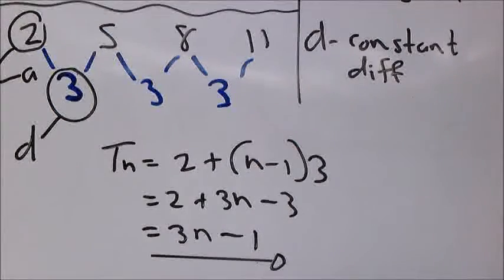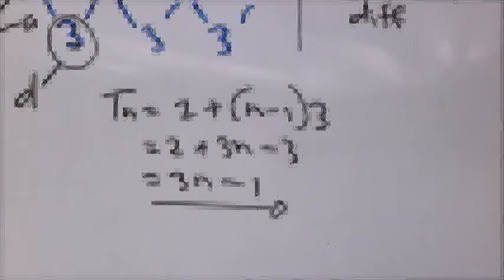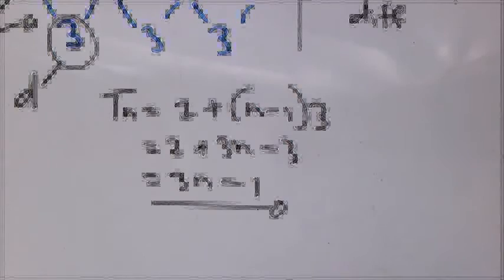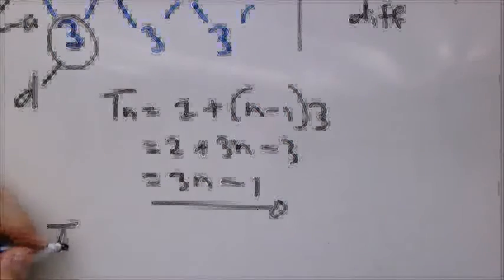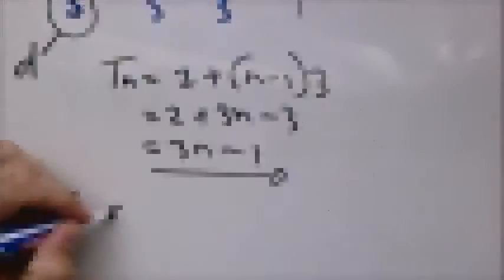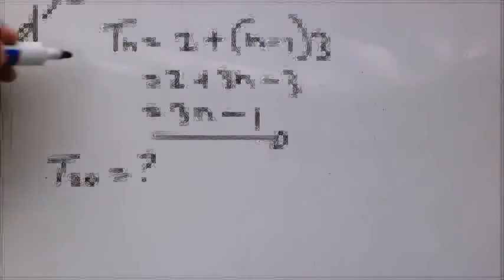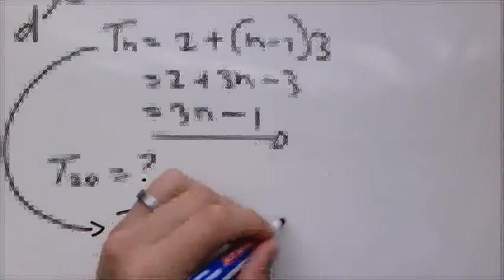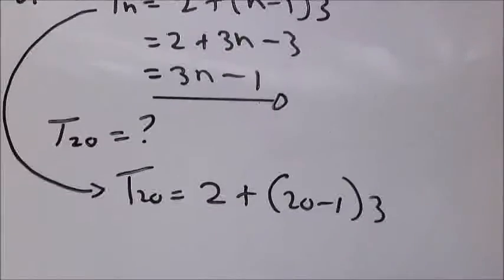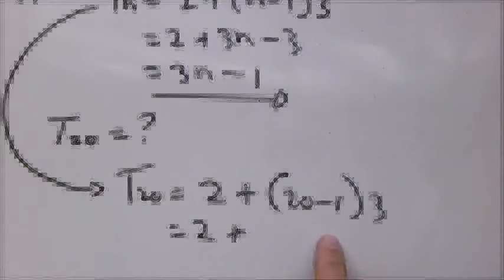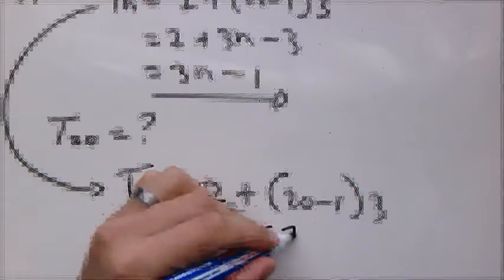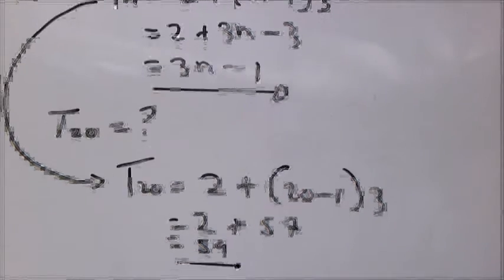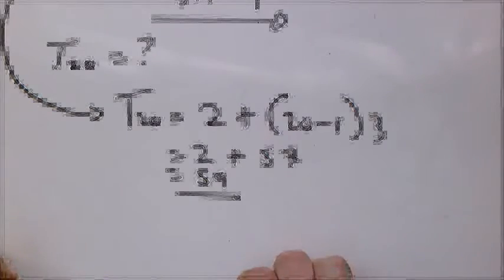Now that you've got your formula, it's very easy to calculate any term value. Let's do an example. Say I want to know the 20th term value. T20 equals 2 plus bracket 20 minus 1 times 3. So 2 plus 19 times 3 equals 2 plus 57, which equals 59.